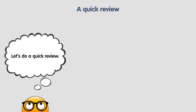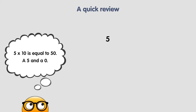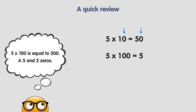Let's do a quick review of what we have learned. When multiplying a whole number by 10, simply add a zero to the end of the number. 5 times 10 is equal to 50 — a 5 and a zero. When multiplying a whole number by 100, simply add two zeros to the end of the number. 5 times 100 is equal to 500 — a 5 and two zeros.